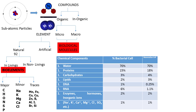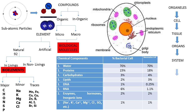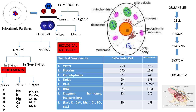Different biological molecules assemble to form organelles, and organelles assemble to form cells. Cells assemble to form tissues, tissues form organs, organs form systems, and systems form individuals. Individuals may be prokaryotic or eukaryotic, unicellular or multicellular. Individuals of the same type form a population - a group of individuals belonging to the same species, like wild cows of the same species forming a population.